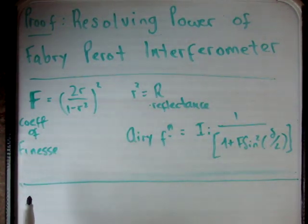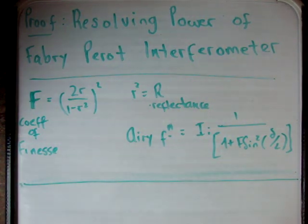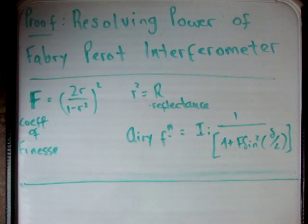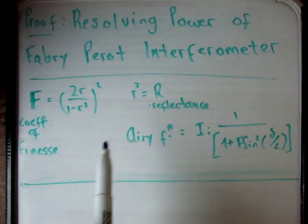We define the coefficient of finesse as 2r over 1 minus r squared, all to be squared, whereby root r is the root of the reflectance.